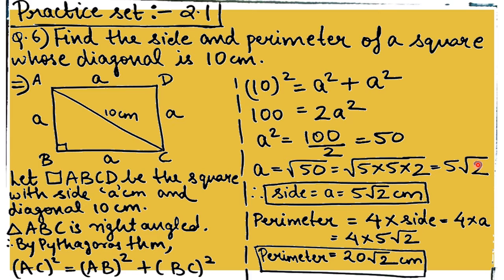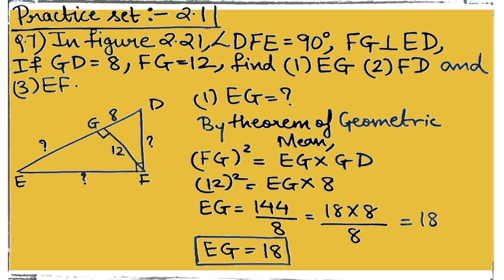Once the side is found as 5√2 centimeters, we find the perimeter using the formula 4 × side = 4 × 5√2 = 20√2 centimeters. So we found both the side and the perimeter. There are two ways to find the side — either by Pythagoras' theorem or by the 45-45-90 theorem. Whichever you find simpler, use that method, but always mention the theorem you are applying.